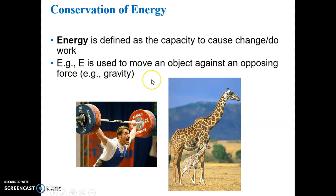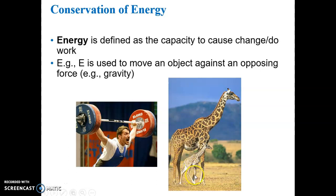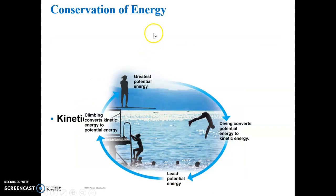Energy is used to move an object against an opposing force like gravity, like this weightlifter. Even if we don't think about gravity all the time, it is constantly around us and we have to use energy to work against it. Walking across the ground requires energy because you're essentially lifting your body a little bit by lifting your limbs to take steps — you're fighting gravity all the time.